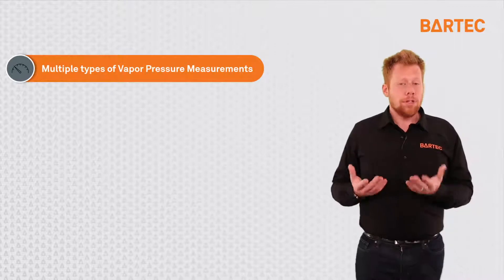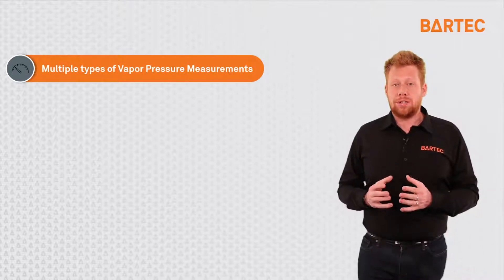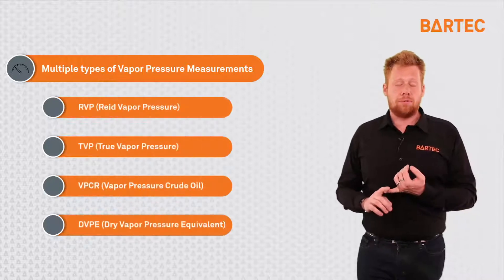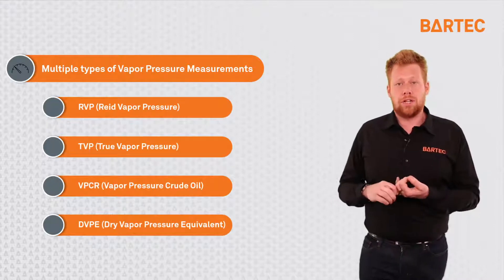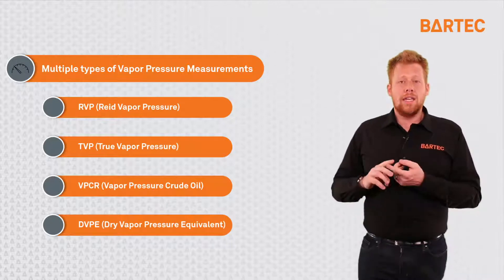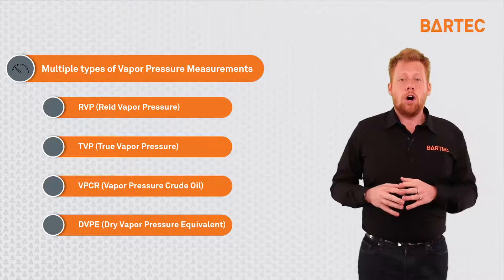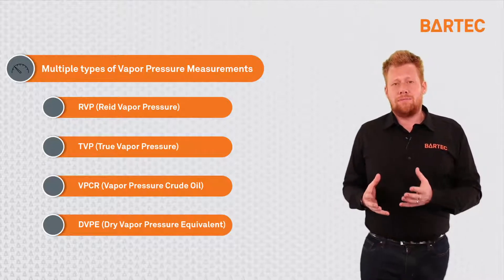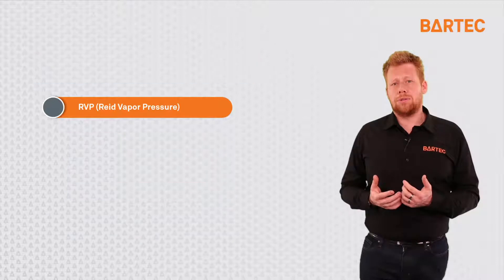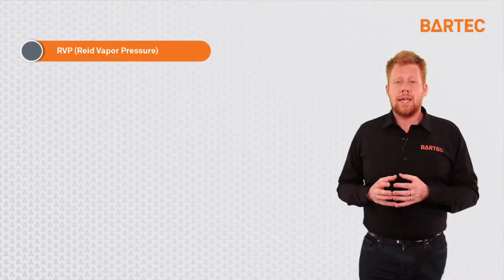There are multiple types of vapor pressure. You will hear terms such as Reid vapor pressure RVP, true vapor pressure TVP, vapor pressure of crude oil VPCR, even dry vapor pressure equivalent DVPE. All of these are different ways of measuring vapor pressure. For the most part though, RVP is the most important of those measurements.